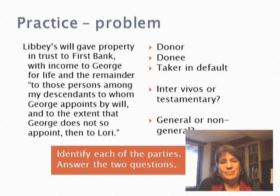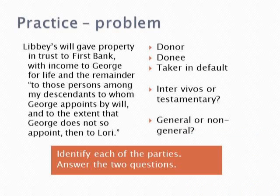Here's a practice problem. Libby's will gave property in trust to First Bank with income to George for life, remainder to those persons among my descendants to whom George appoints by will, and to the extent that George does not so appoint, then to Lori. We need to identify the donor, donee, taker in default, decide whether this is inter vivos or testamentary, and decide whether it's general or non-general.